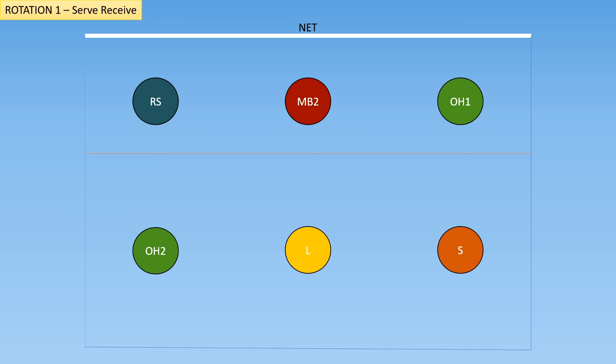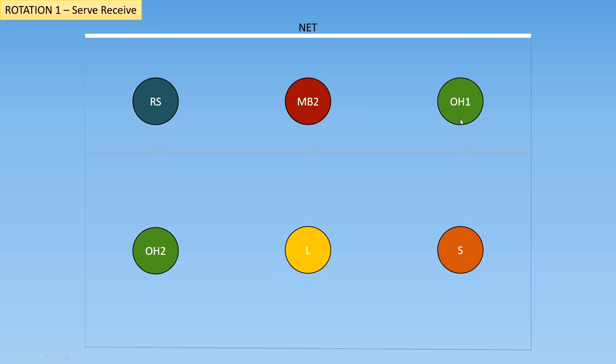Moving on to the next rotation, we have lost the point and we are now in serve-receive. The problem with this rotation is that the setter is currently in a passing position, and we don't want that because if the setter passes, they will be unavailable to set. So in all of these serve-receive rotations, we're going to be hiding the setter away from passing. The way most teams achieve this is by having the outside hitter step all the way back to pass, while ensuring the rules of rotation are not broken — the setter is not crossing in front of the outside hitter, and is not crossing to the left of the libero.